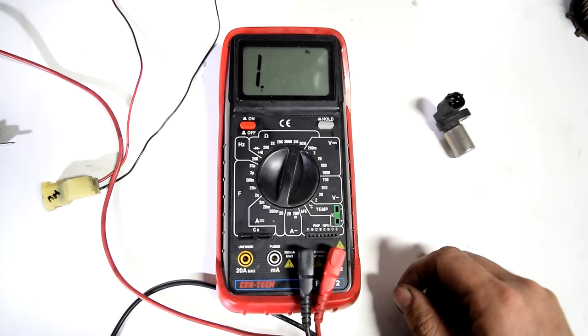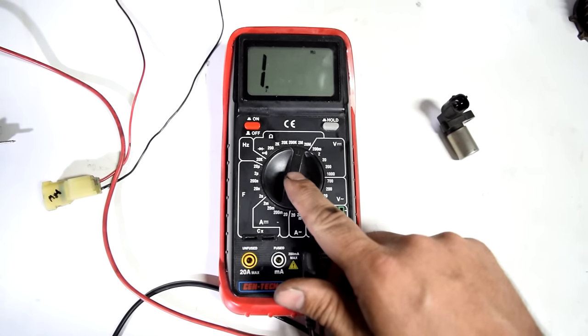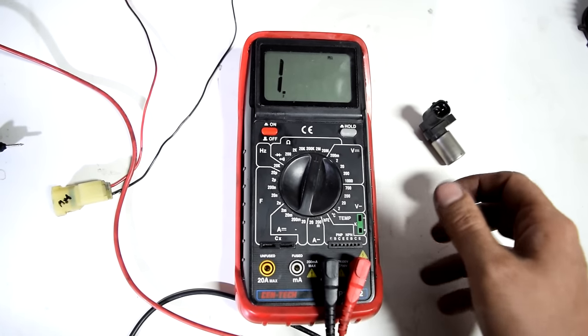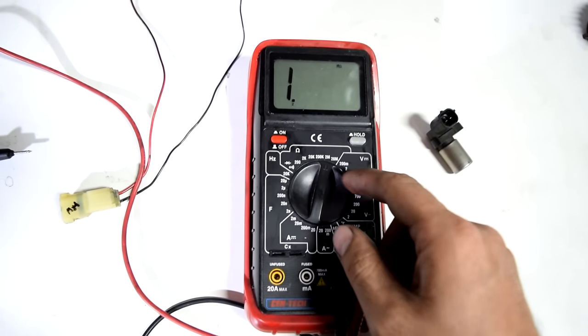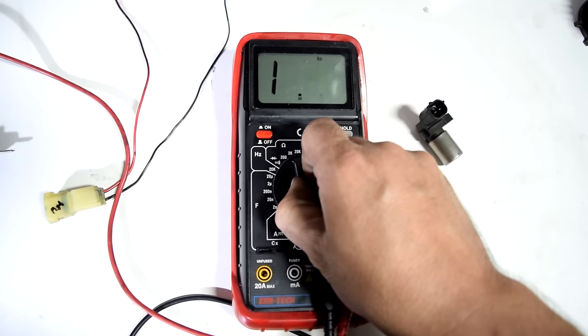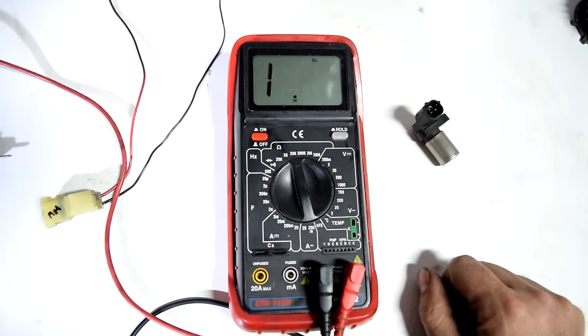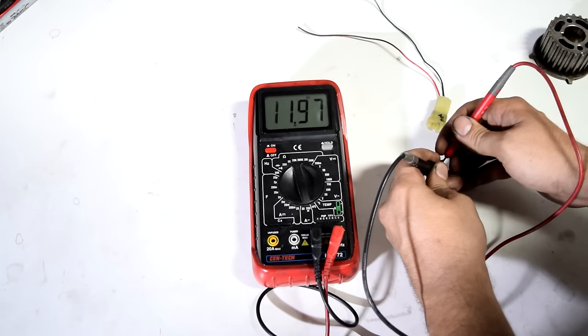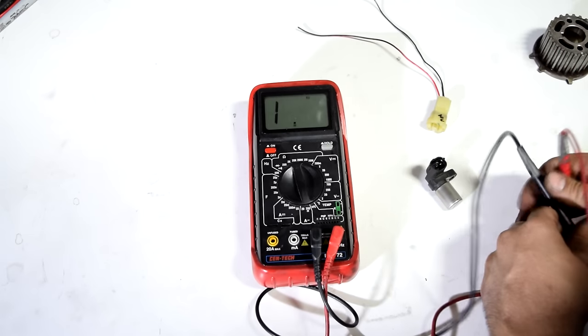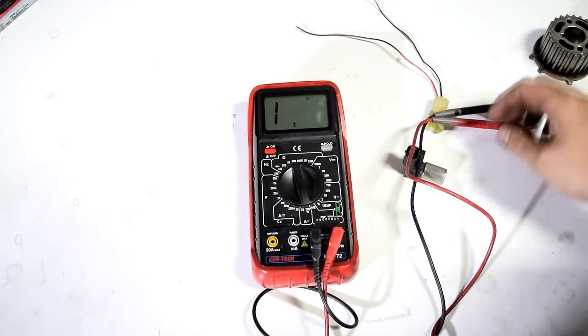After that we're going to do the resistance test. So you get your multimeter, put it on your ohm settings. And this Subaru crankshaft position sensor is supposed to have about 2000 to 2500 ohms of resistance. So I'm going to choose 20,000 ohms on the scale of this multimeter. And then we'll take our measurement and as you can see we got 2,010 ohms of resistance or in other words 2010 ohms.